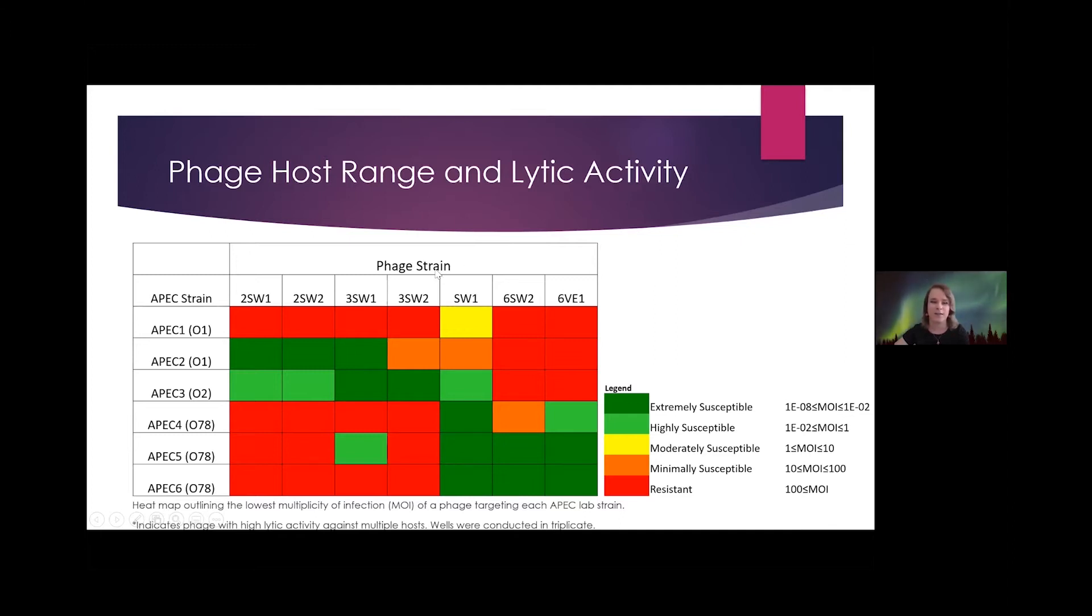Each of the phages that we isolated, you can see from this heat map here where green shows high susceptibility of an APEC strain to phage. We found that each of these phages had strong activity against at least one tested APEC strain.